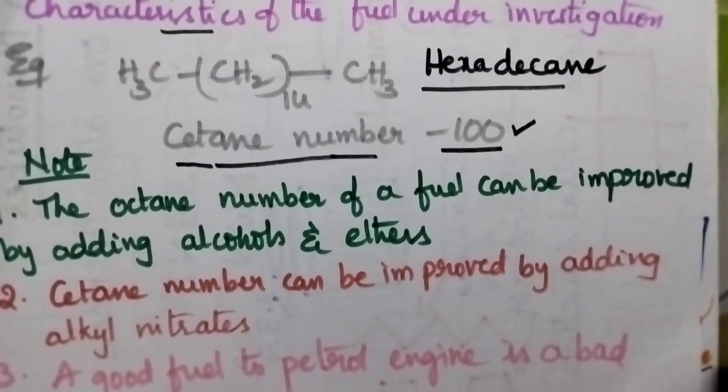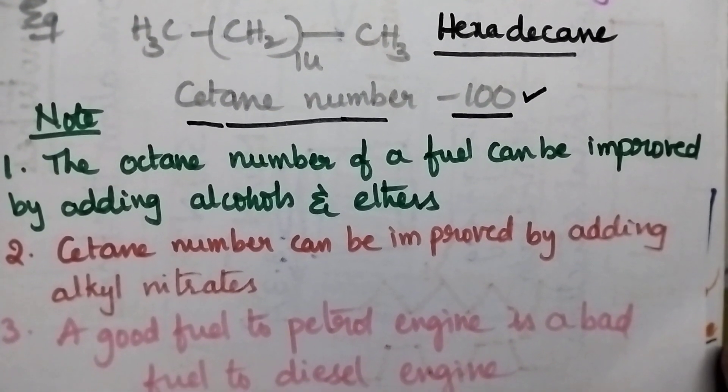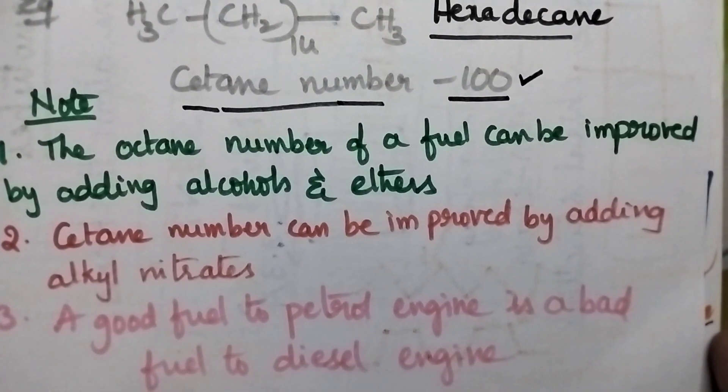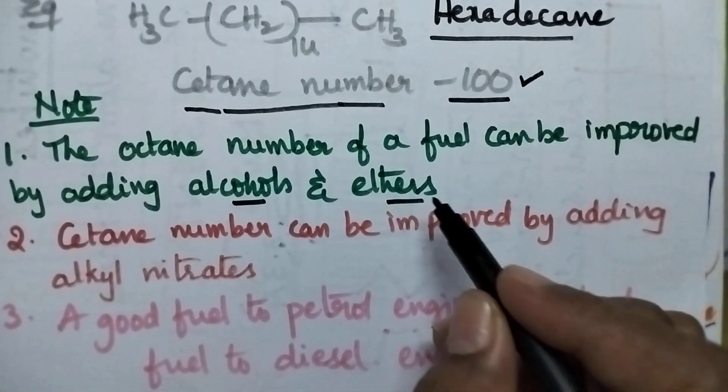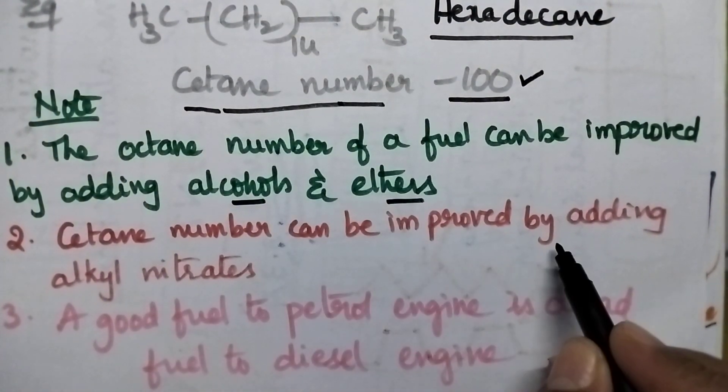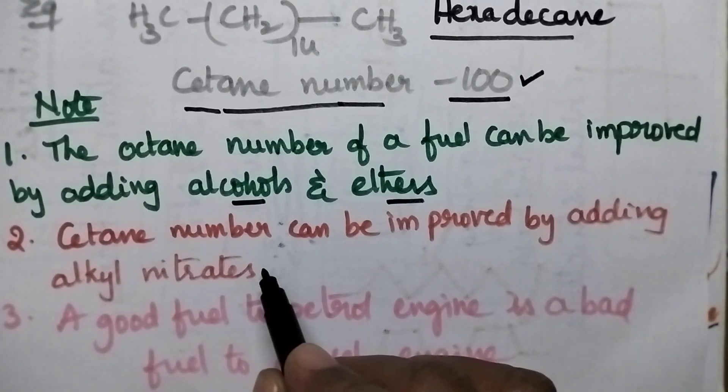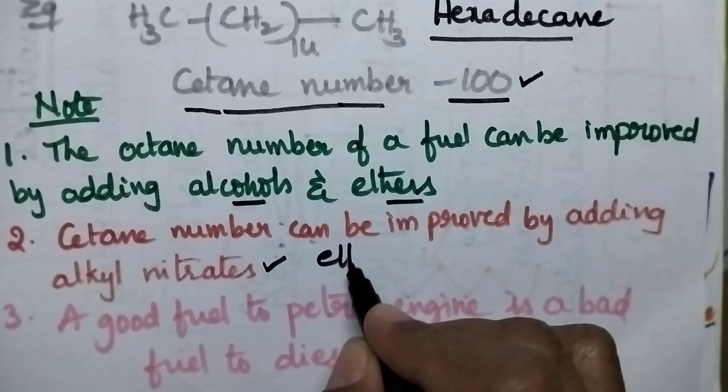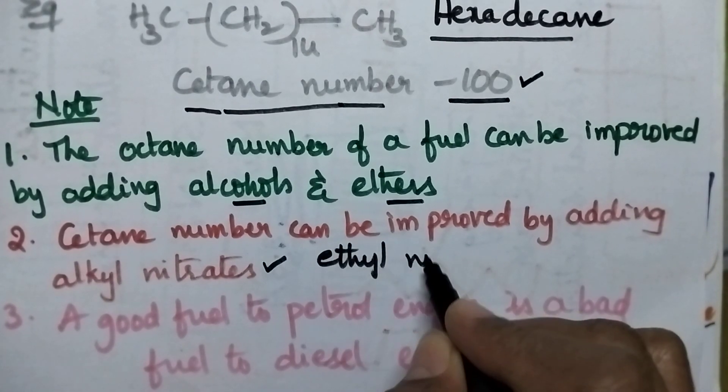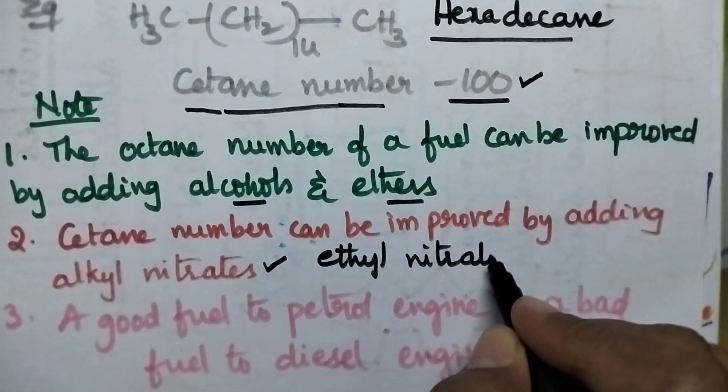The octane number of petrol can be improved by the addition of alcohols and ethers whereas cetane number can be improved by the addition of alkyl nitrates like ethyl nitrate and amyl nitrates.